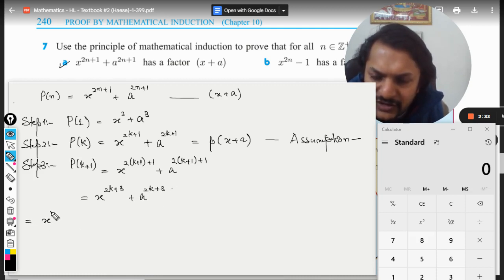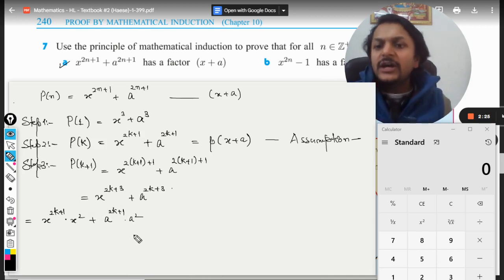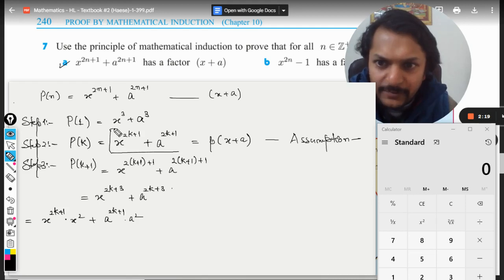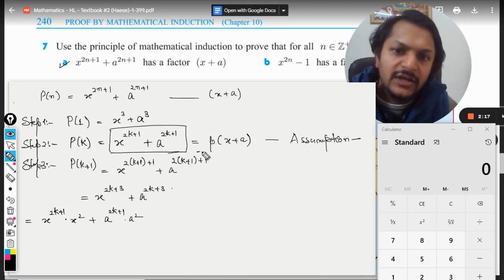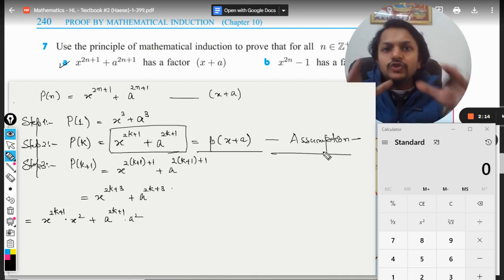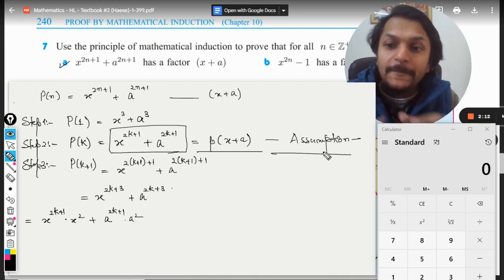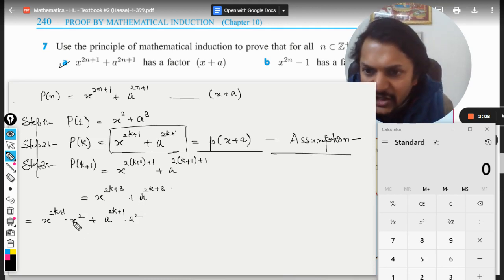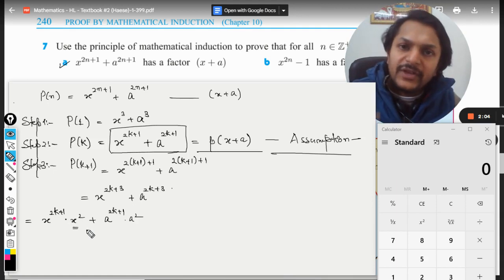This can be further written as x^(2k+1) times x² plus a^(2k+1) times a². I'm dividing the powers because I want to bring in this expression from somewhere. You see, this expression—the assumption that I have made—we want to use this assumption to prove step number three as correct. We want to get rid of this x² from this place now.